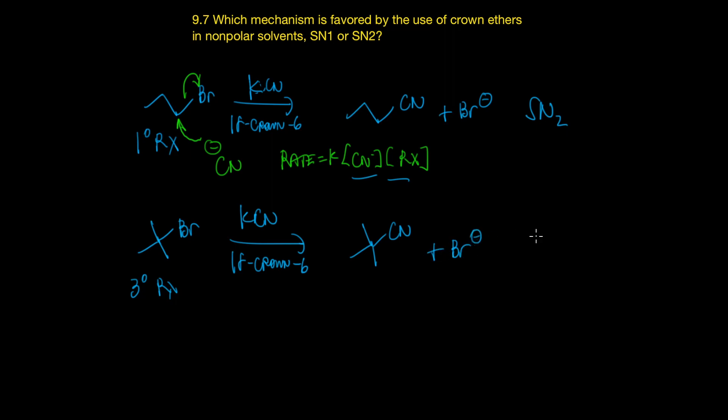This reaction is SN1. As you recall, the cyanide can't get in here to the tertiary reaction center due to steric hindrance and kick off the bromide. So, the reaction mechanism instead goes by heterolysis or breaking of the carbon-bromine bond to give you a tertiary carbocation. And this is the rate-limiting step or the slow step.